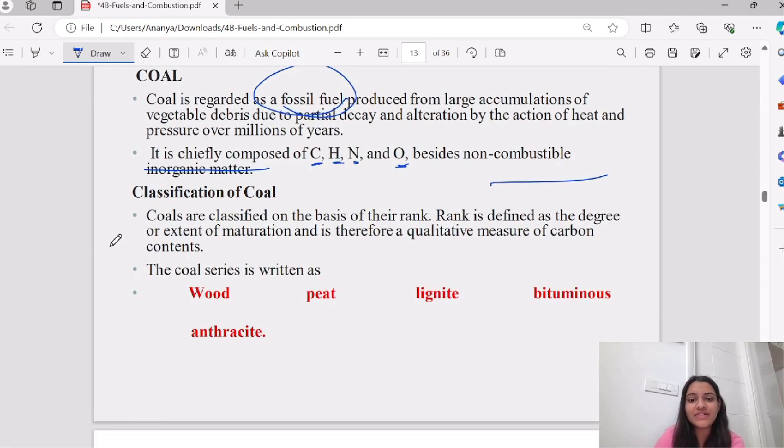Now, coal is classified on a rank basis. What is its extent and quality measure? What is its amount of carbon content? The coal is called wood, peat, lignite, bituminous, and anthracite.